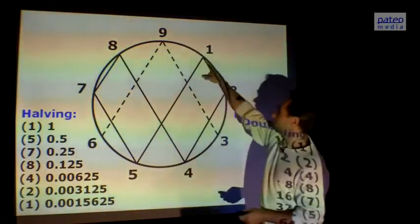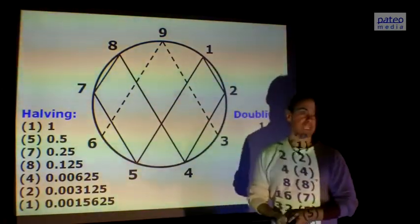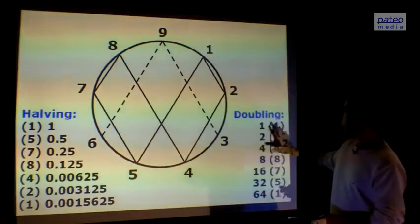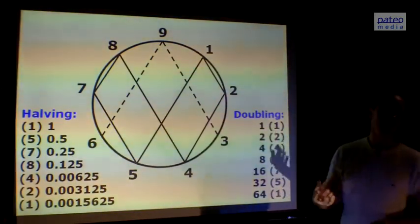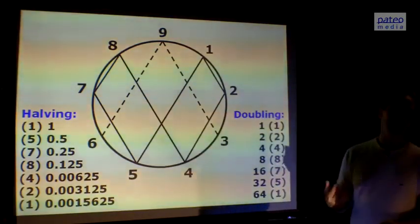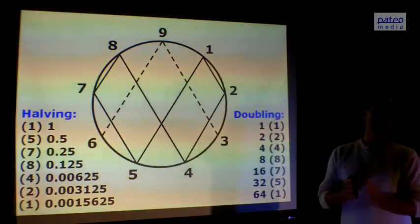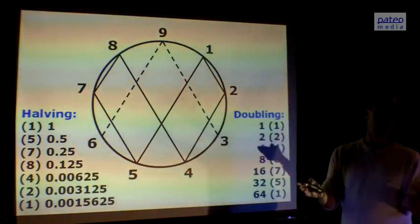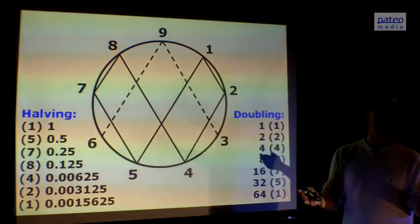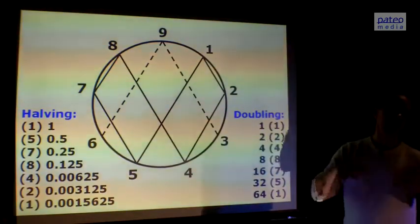So you could say this way is the doubling sequence, and the other way around is the halving sequence. This is very important. If we look at computer technology, the binary computer language is based on doubling. But also if we look at biology, a cell is split into two, which are two cells. It's doubling. Then it splits into four, then into eight, until 64.